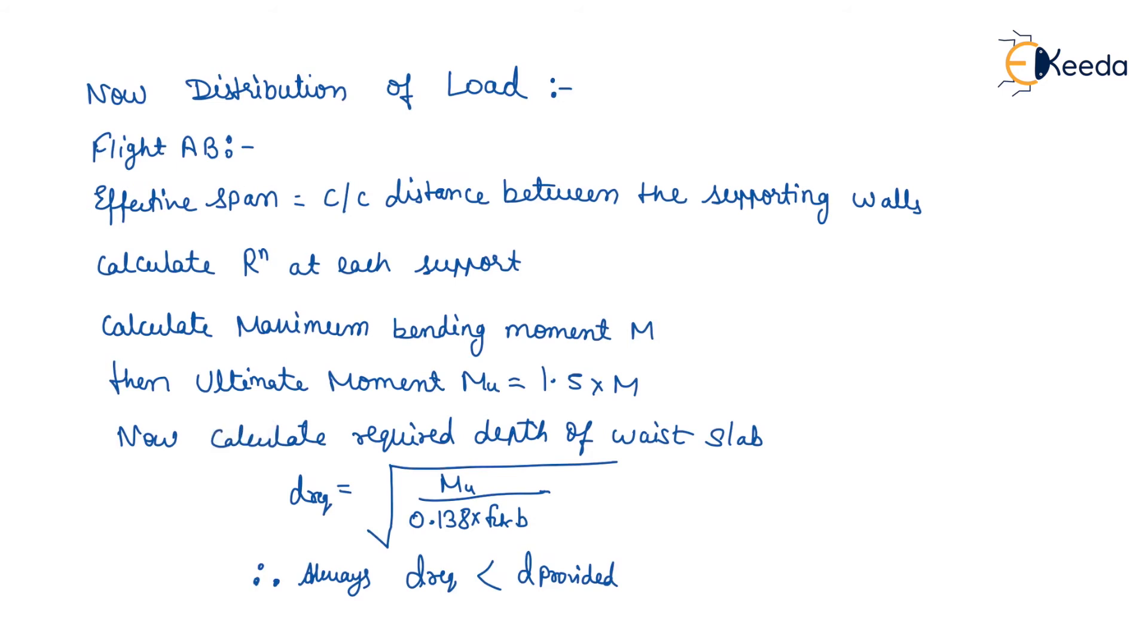Taking flight AB, effective span is center to center distance between the supporting walls. Calculate reaction at each support, calculate maximum bending moment M, then ultimate moment Mu by multiplying 1.5 with maximum bending moment. Now calculate required depth of waist slab.